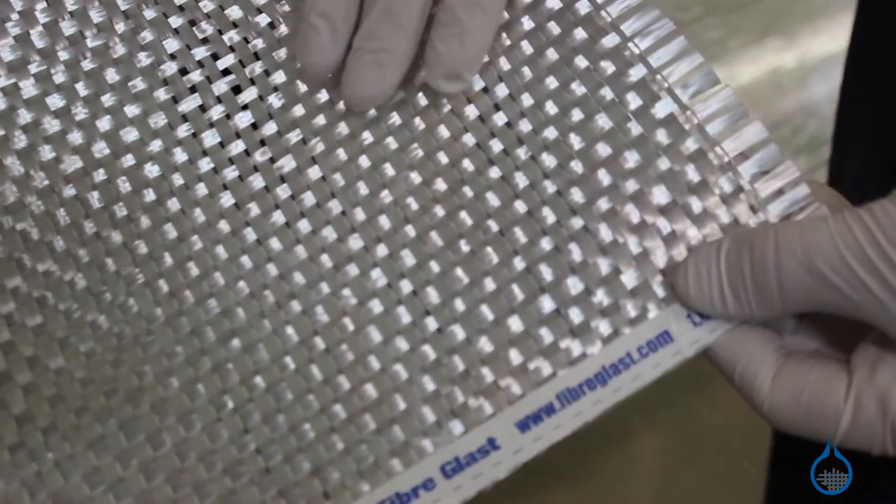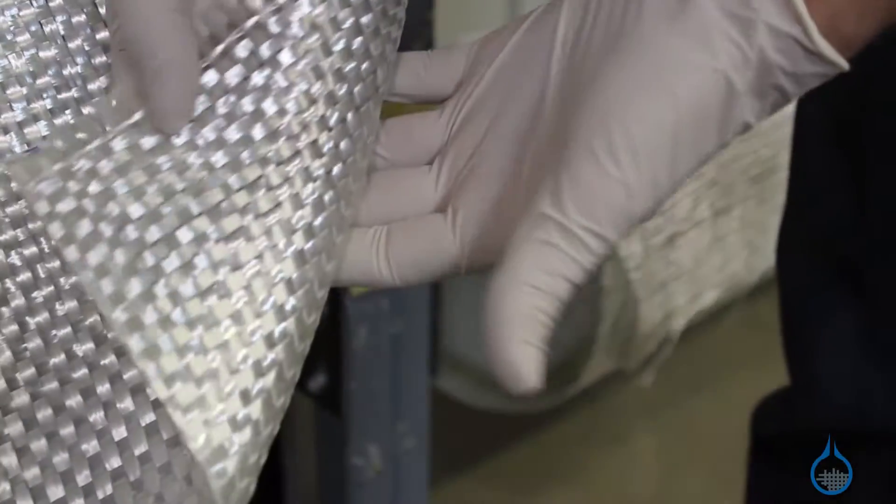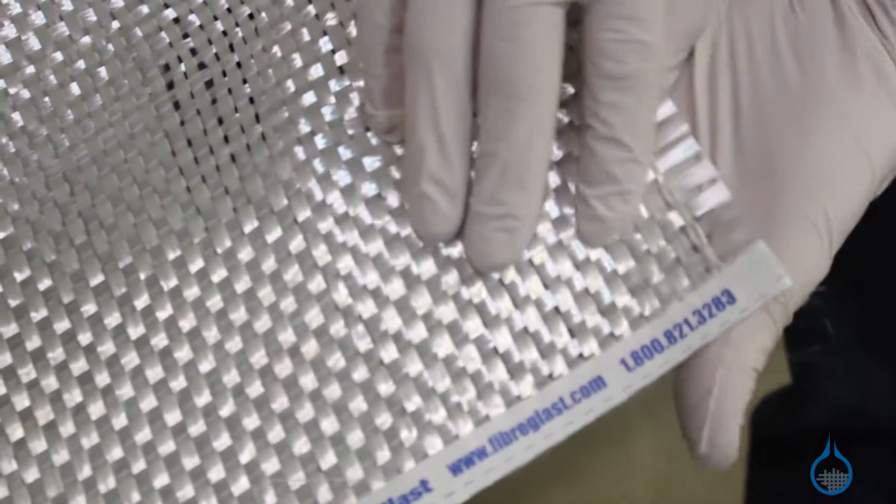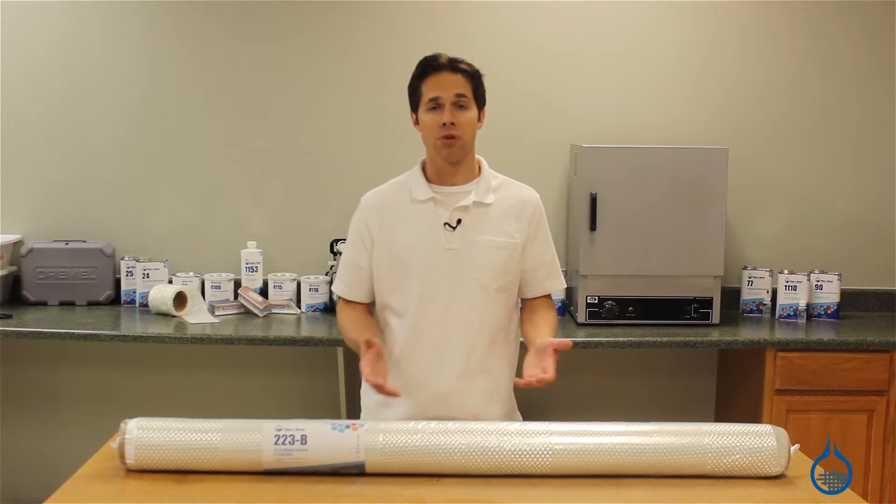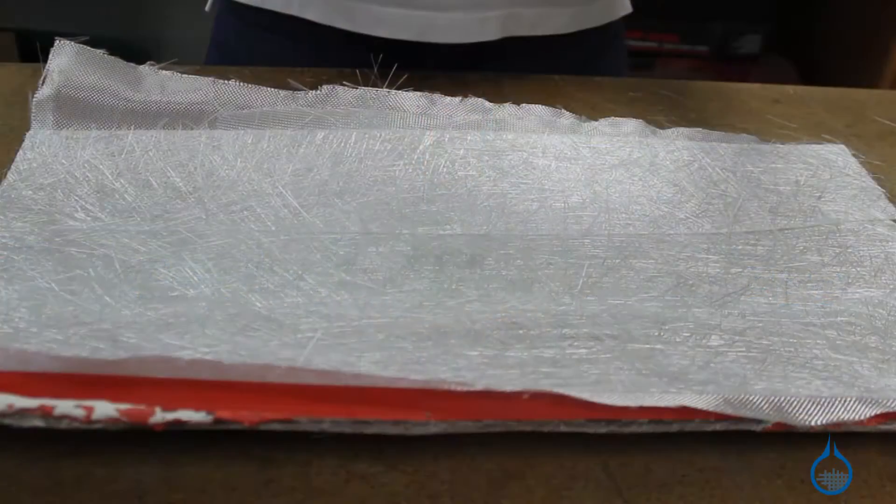While it's not a conformable fabric, plain weave construction allows uniform strength in both horizontal and vertical directions, and fabricators will strengthen parts by adding plies at 45 degree angles within their lamination.